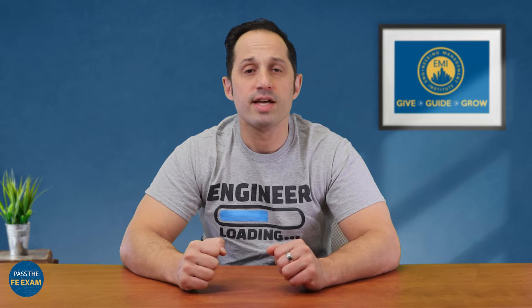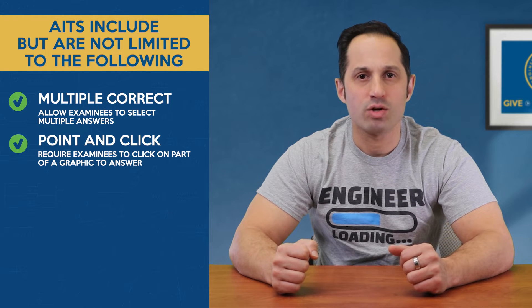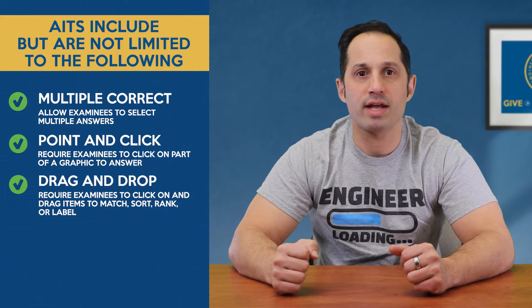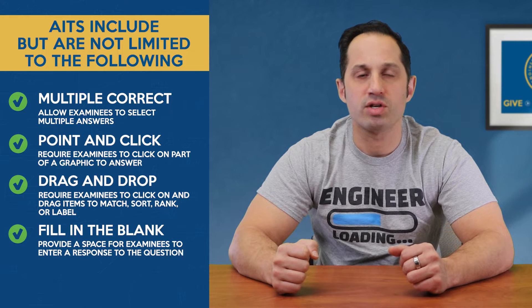Exam Format and Question Types. CBT exams include traditional multiple-choice questions as well as Alternative Item Types, or AITs. AITs provide opportunities to assess the technical knowledge of examinees using methods not available through pencil and paper testing. All questions, including AITs, are scored as either Correct or Incorrect — there is no partial credit. AITs include but are not limited to: Multiple Correct, which allows examinees to select multiple answers; Point and Click, which requires examinees to click on part of a graphic; Drag and Drop, which requires examinees to click and drag items to match, sort, rank, or label; and Fill in the Blank, which provides a space for examinees to enter a response.